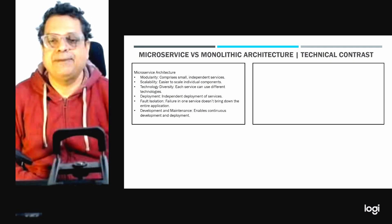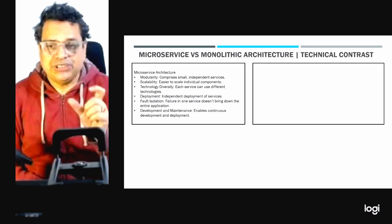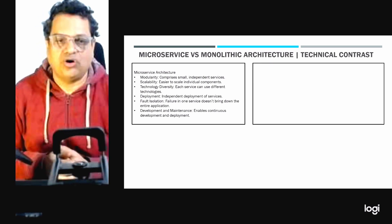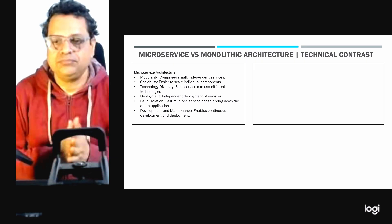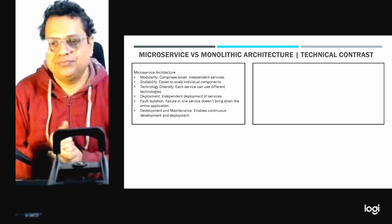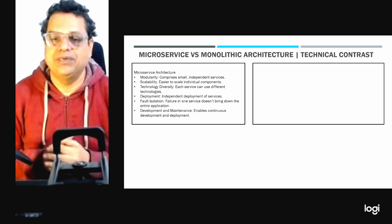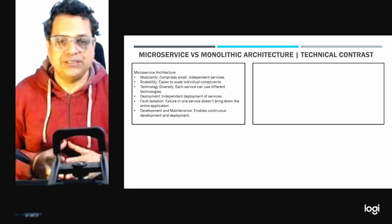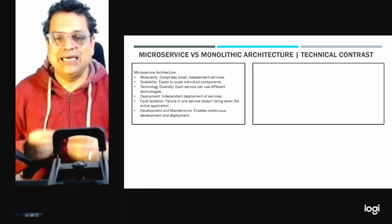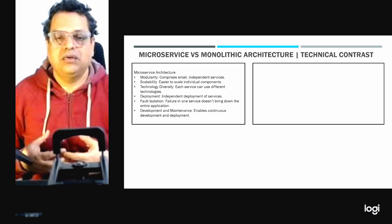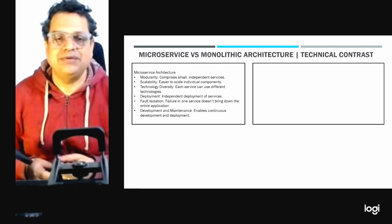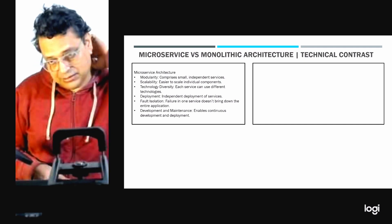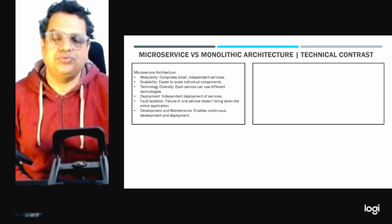The next key factor in microservice architecture is technology diversity, which offers flexibility to use the best technology for each service based on its requirement. The next point is deployment — microservices support continuous deployment and integration, which is more feasible and leads to faster iteration cycles because releases are small and can be done frequently.